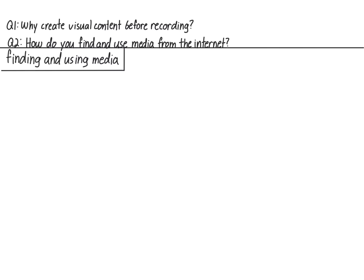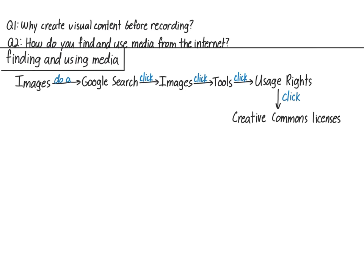Now I'll show you how I search for media and filter my search by license type. Let's start with images. One approach is to do a Google search and click Images to do a Google image search. You can filter the results by license by clicking Tools, then Usage Rights, then Creative Commons licenses. Now only images with Creative Commons licenses will be shown. Once you've found and downloaded your image, fill in the attributions table in the master document, copying the link for the image and the license into the table.